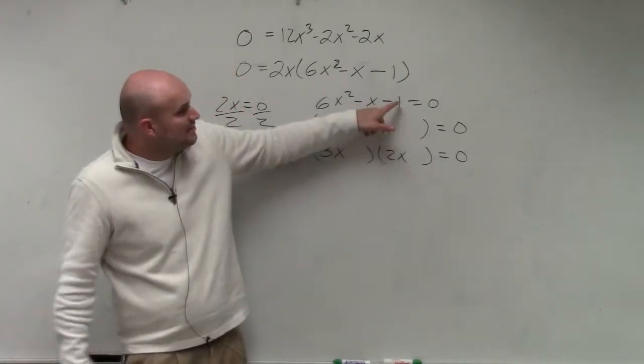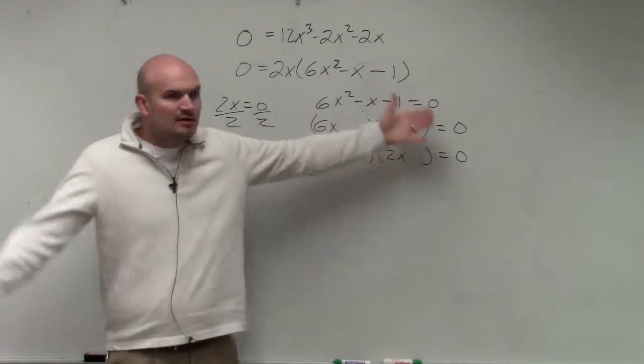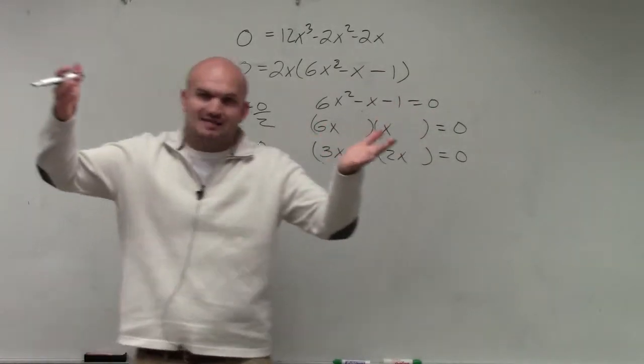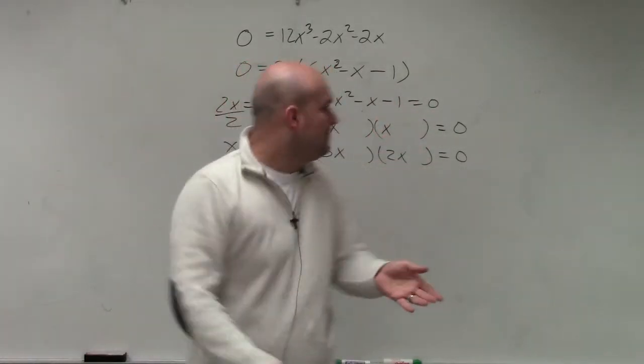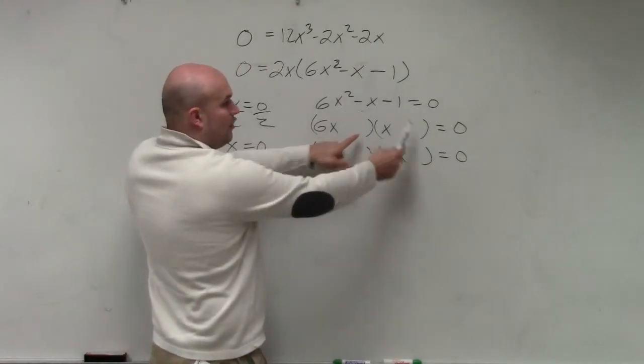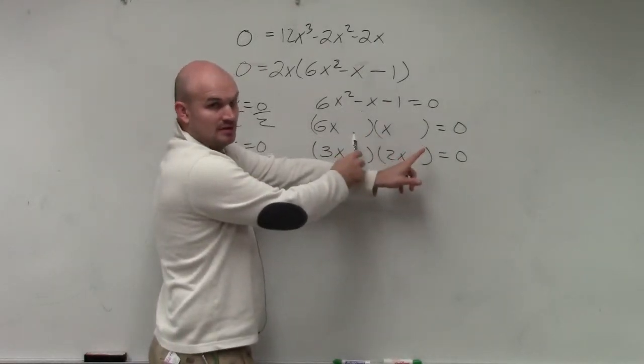So now, I just need to figure out what two numbers would multiply to give me negative 1. Well, that's not too bad. That has to be negative 1 and positive 1, right? But the negative 1 could be here, positive 1 could be here, or they could be switched around.